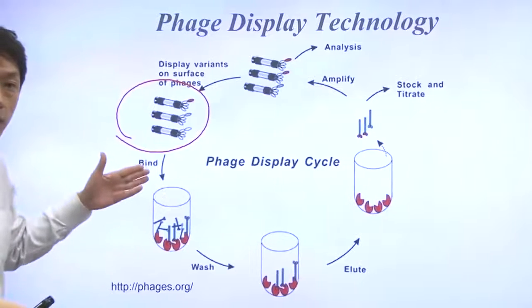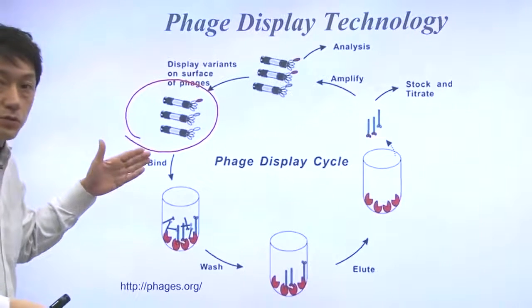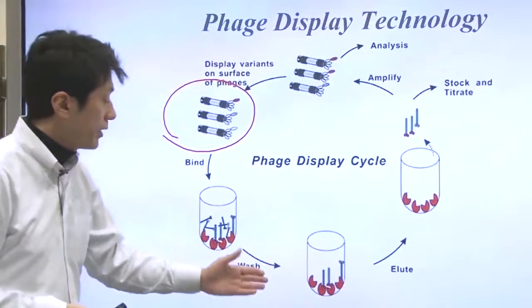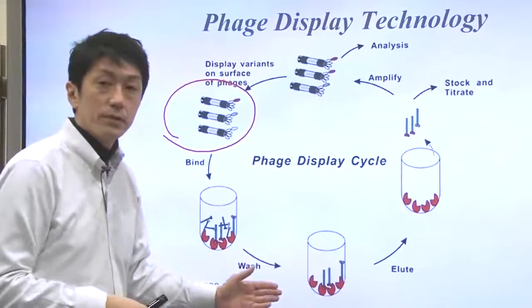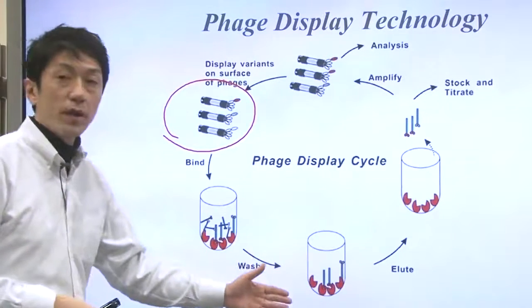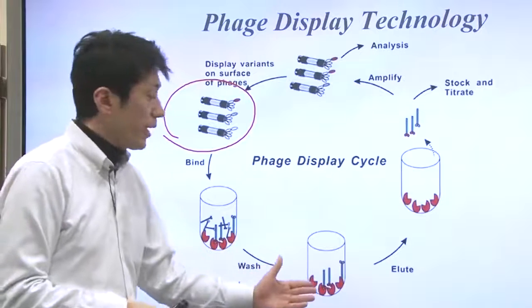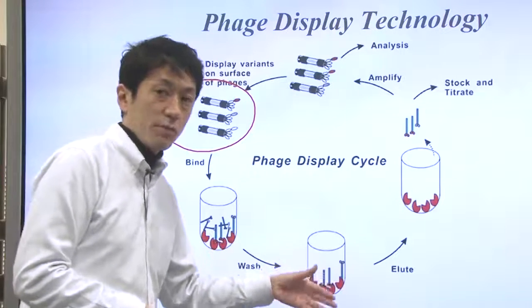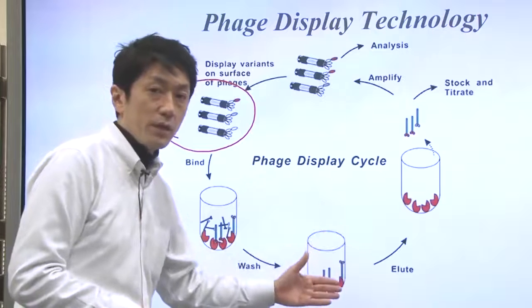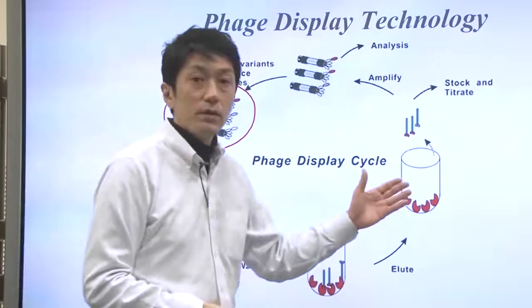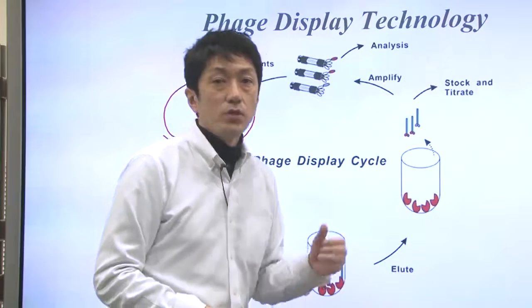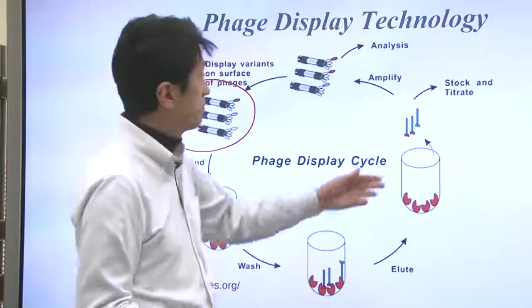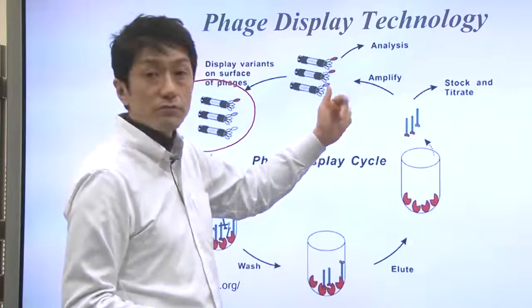Then, the phages whose peptides do not bind to protein X will be washed away — most of them will be washed away. The protein-bound phages are going to be eluted, collected, and used to infect bacteria for amplification.